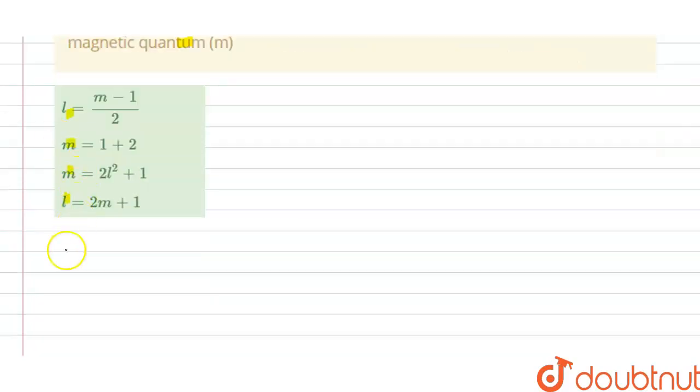So we have to choose the correct option. The solution of this question is, we have the magnetic quantum number M that lies between minus L, 0, plus L.